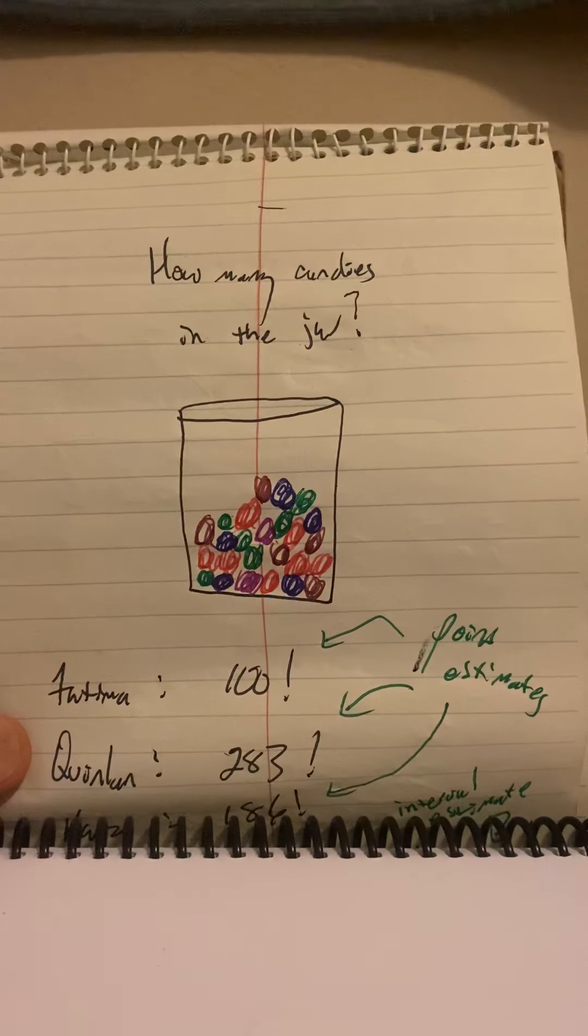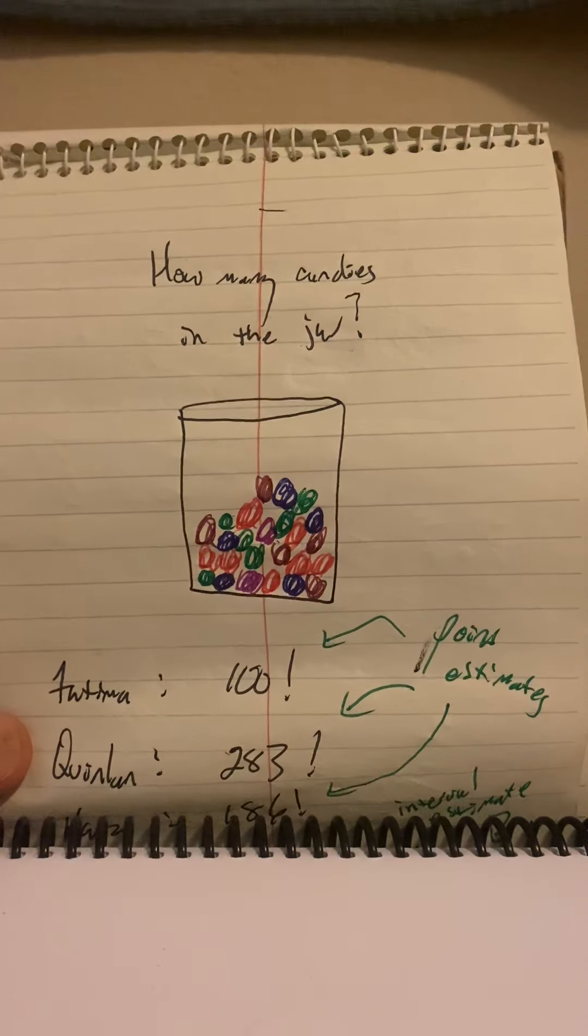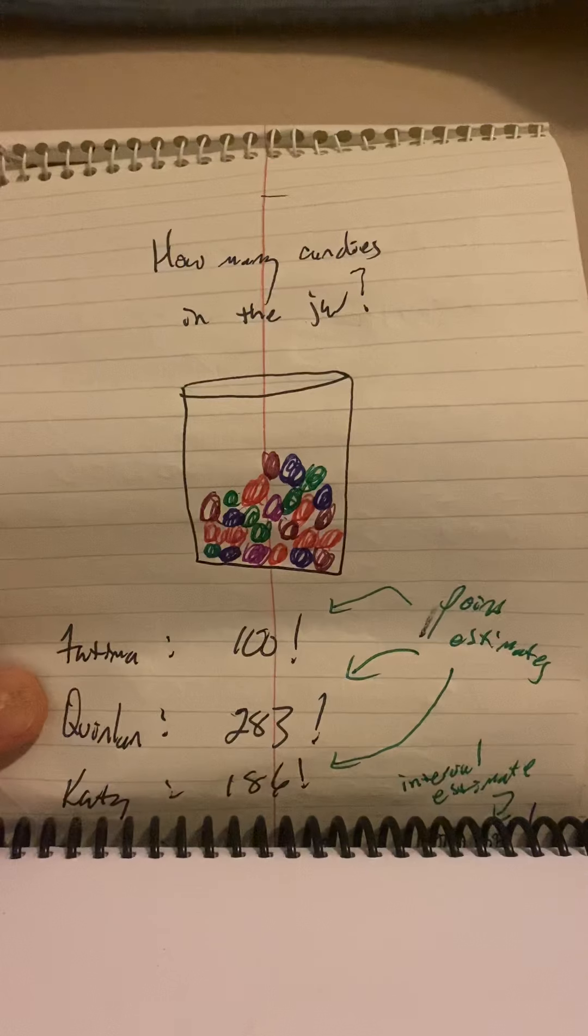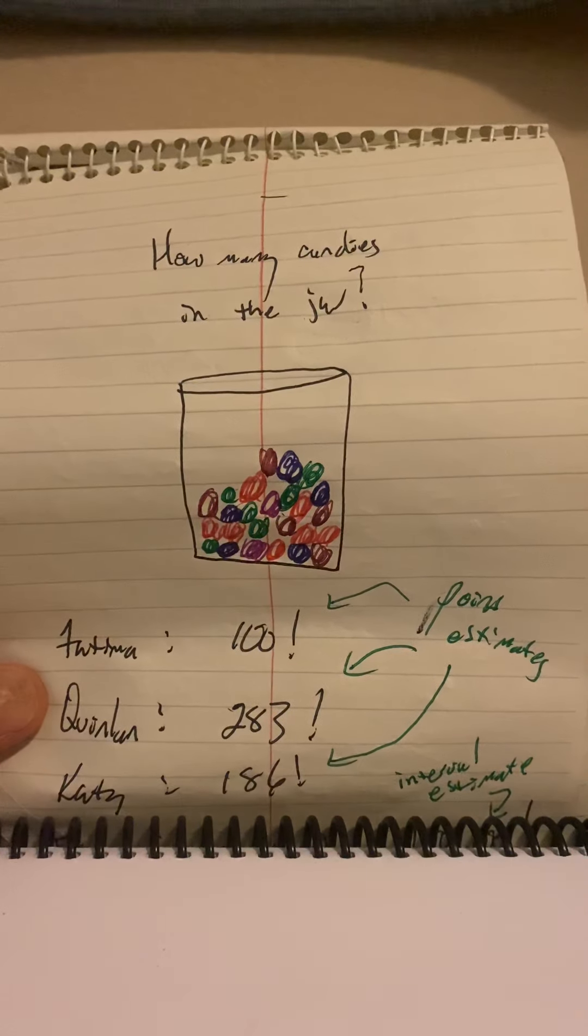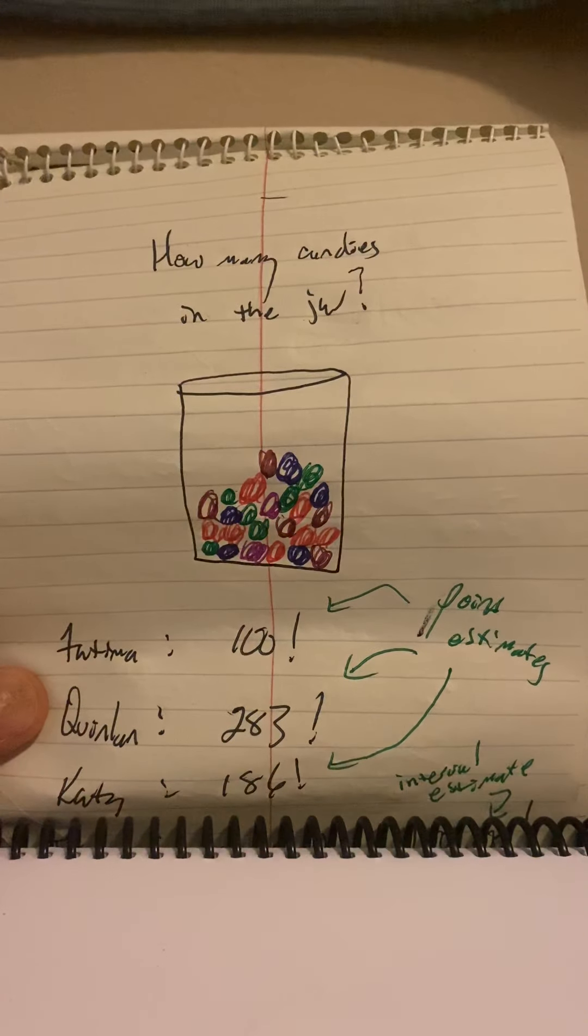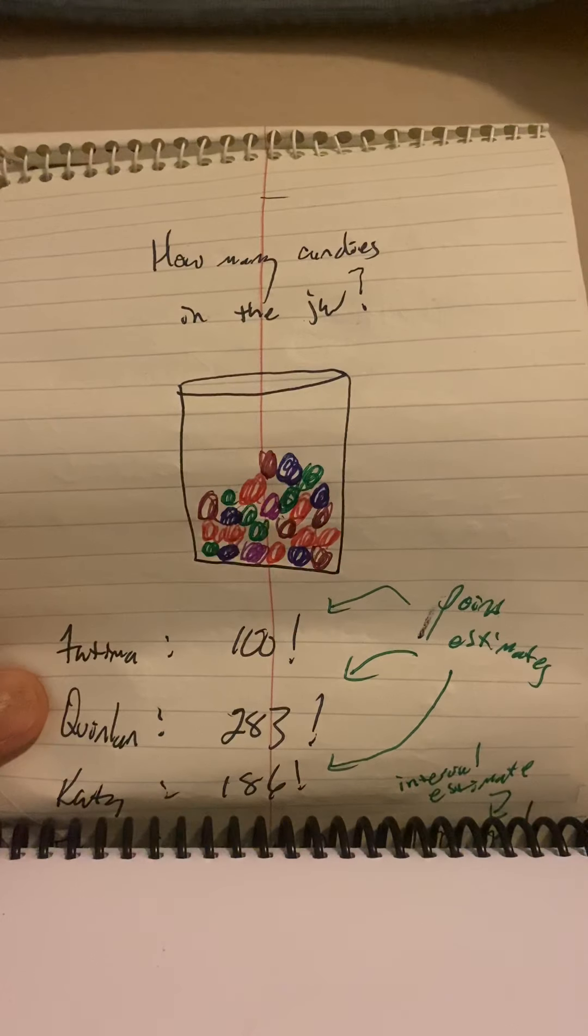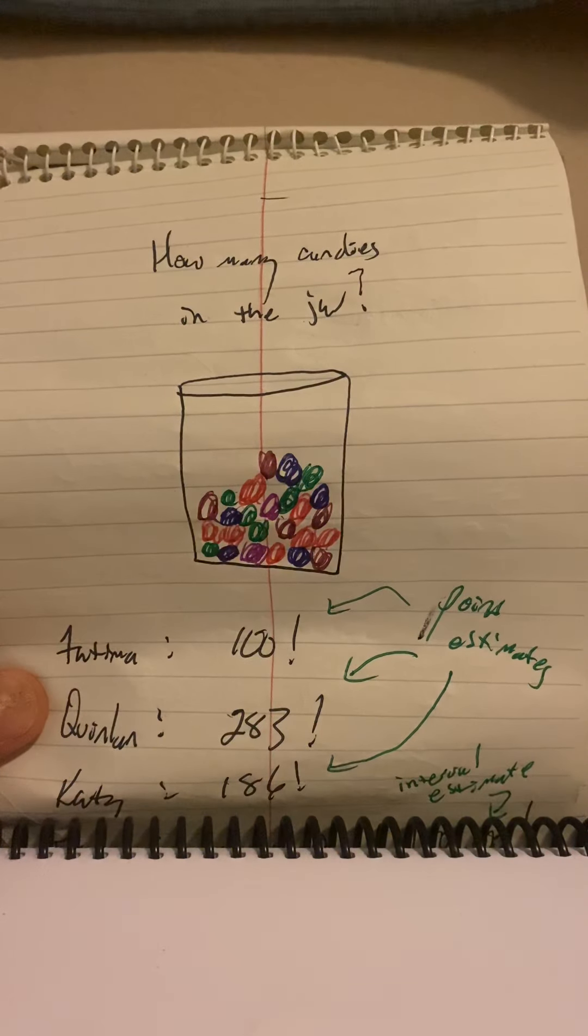He thinks he's going to get the candy. He's pretty confident. Katie watches Quinlan do his math and sees about five errors. So Katie says, I think there's 186 because all of his errors estimated too high. Secretly, there's just 201.